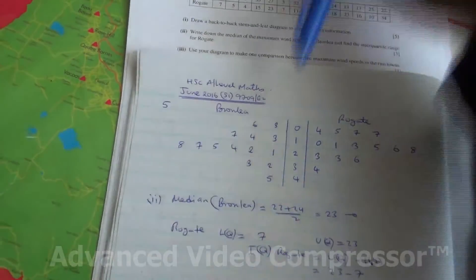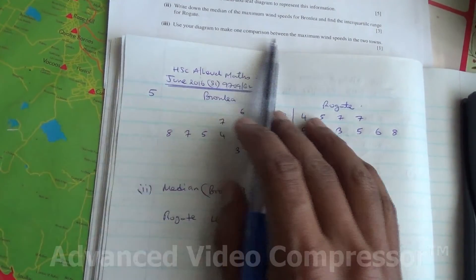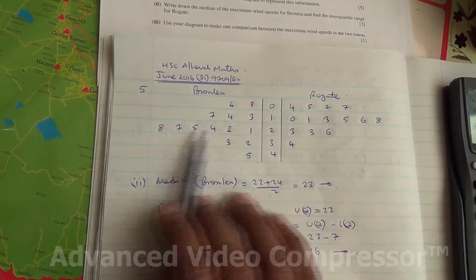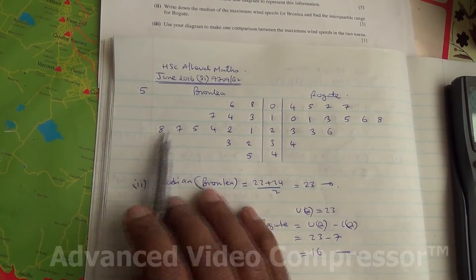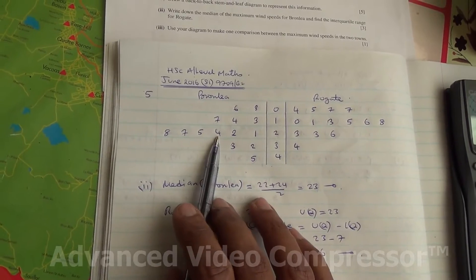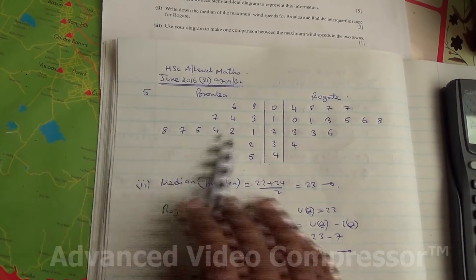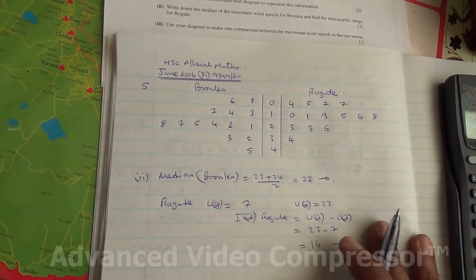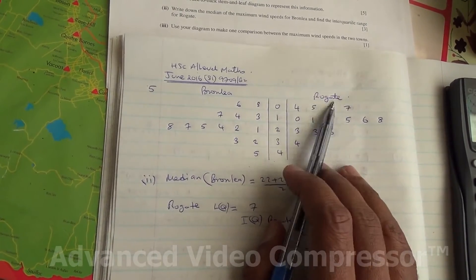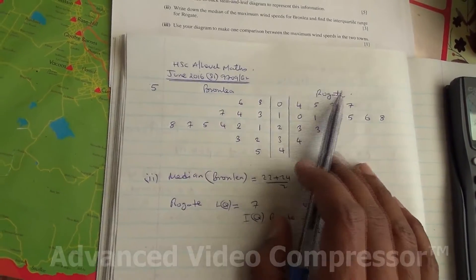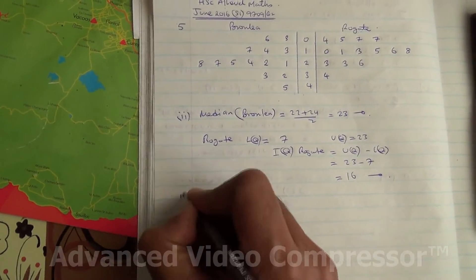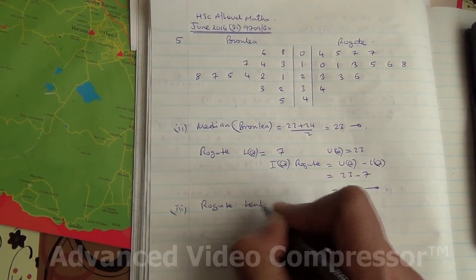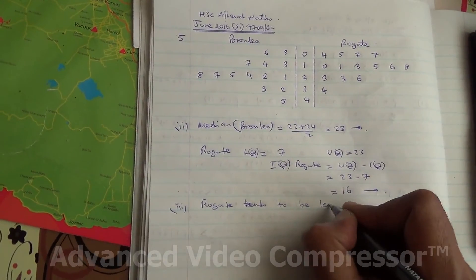Now let's look at the next part of the question: use the diagram to make one comparison between the maximum wind speeds in the two towns. The maximum wind speed for Rogate is 34, while Bromley has values up to 45. Looking at the spread, Rogate tends to be less windy by comparison.